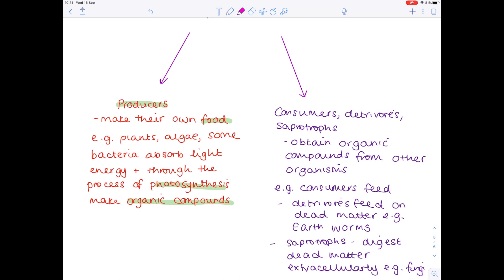So to highlight the key points here: the second way of obtaining energy is the consumer, detritivore, saprotrophic way which is effectively feeding. Now even though some of those consumers will be carnivores eating meat, for example, at some point in the food chain one of those organisms will have had to have been eating plants.